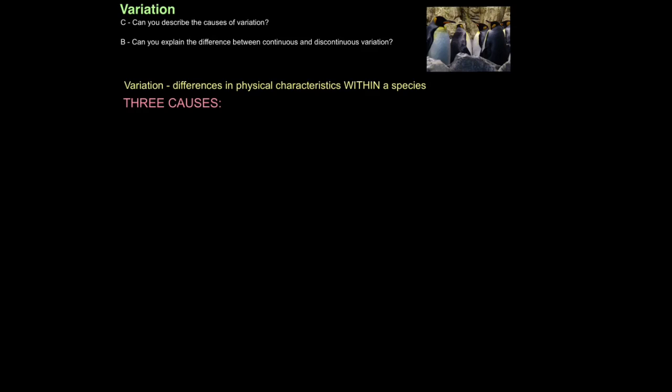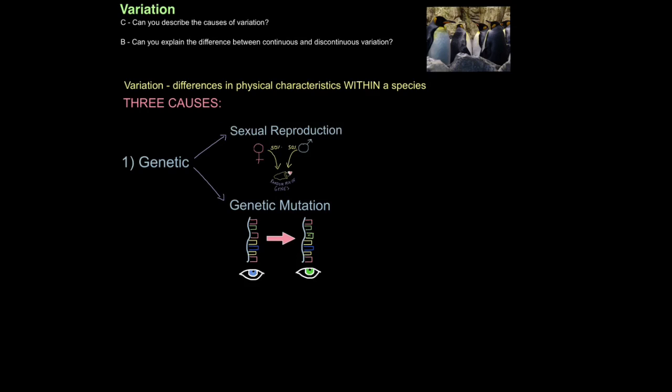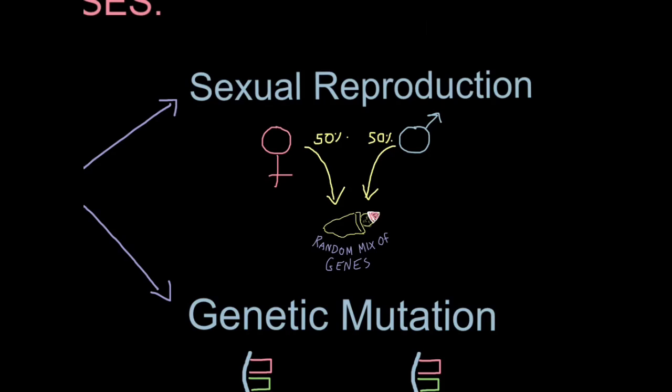So there are three main causes of variation. The first is to do with the genes you inherit. So I've already talked about sperm and egg. So fertilization is the process where the sperm fuses with the egg, and more specifically the nucleus in the sperm and the nucleus of the egg, which contains the genes from the female, fuse.